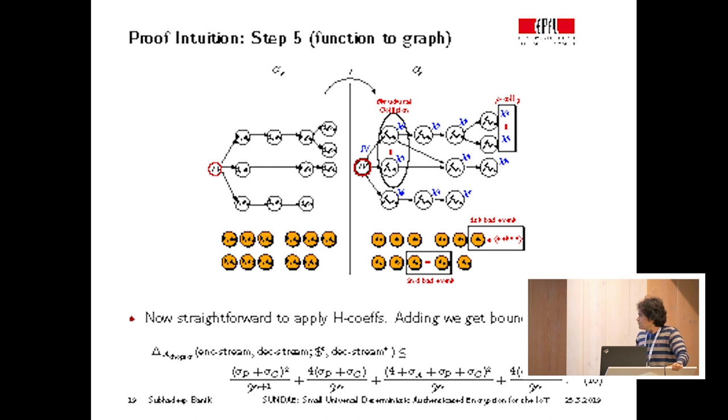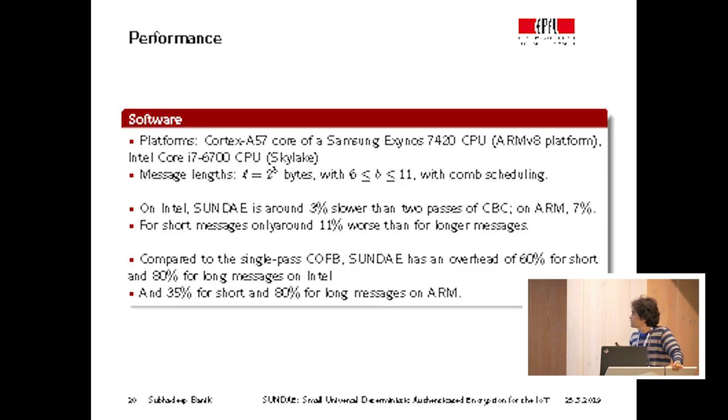And now, since we have all the necessary terms, we can add all of them to get the bound. So very quickly, we do a brief overview of performance. We implemented the mode in both a low-end AVR8 platform and also on the Intel CPU for message lengths from, I think, four to 128 blocks. We found that on high-end architectures, it's only 3% slower than two passes of CBC, and on the low-end architecture, the difference was around 7%. For all processors in general, for short messages, it was only 11% worse than for longer messages. However, the performance penalty is far greater for modes like COFB, which were designed to be single pass. For this, we have a significant penalty in both low-end and high-end platforms.